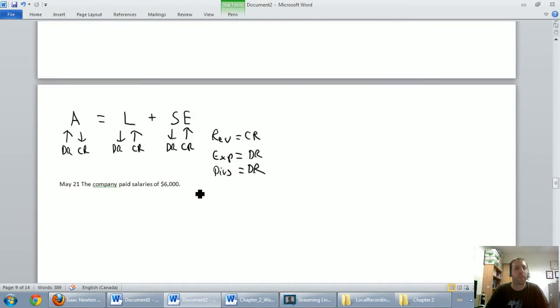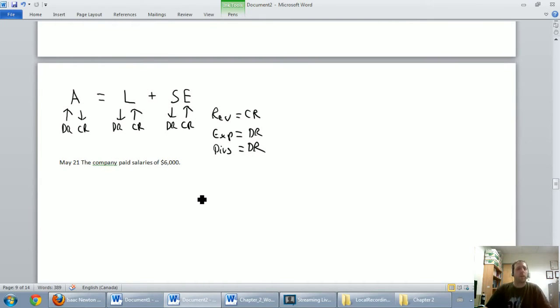The date here is May the 14th, and the description again is earned $7,500 on account. Let's carry on. May 21st, the company paid salaries of $6,000. Is cash involved here? Yes. Always ask yourself that question, because it makes the journal entry easy. Is cash involved? Yes. Is cash going up? No.